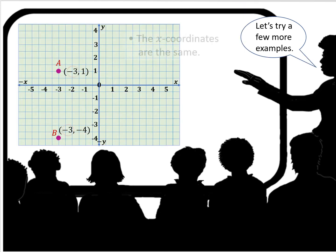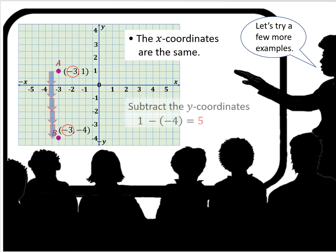Let's try a few more examples. So here we have points A and B plotted on the coordinate graph. The x-coordinates are the same. Subtract the y-coordinates. 1 minus negative 4. When you subtract, you add the opposite sign. So 1 plus 4 equals 5. And the absolute value of 5 is 5. So the distance between A and B is 5.